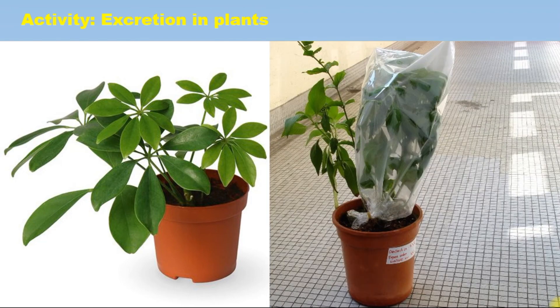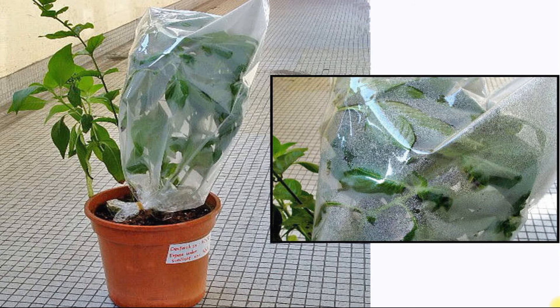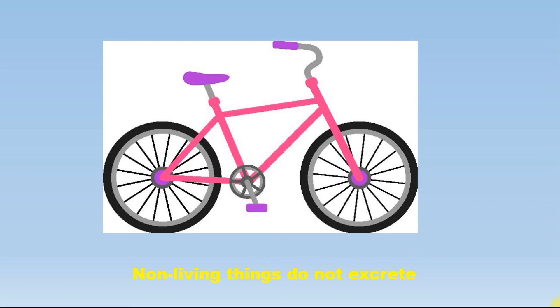Now we'll see an activity showing how plants excrete. Take one potted plant and cover it with a plastic bag, tying the bag tightly at the stem portion below. Keep it in the sunlight for one to two hours. Observe the plastic cover closely — water evaporated from the surface of the leaves gets condensed on the plastic bag. This process is called transpiration, and it is the way plants remove waste. So plants show excretion because they are living beings, whereas non-living beings do not show excretion because they don't have life.